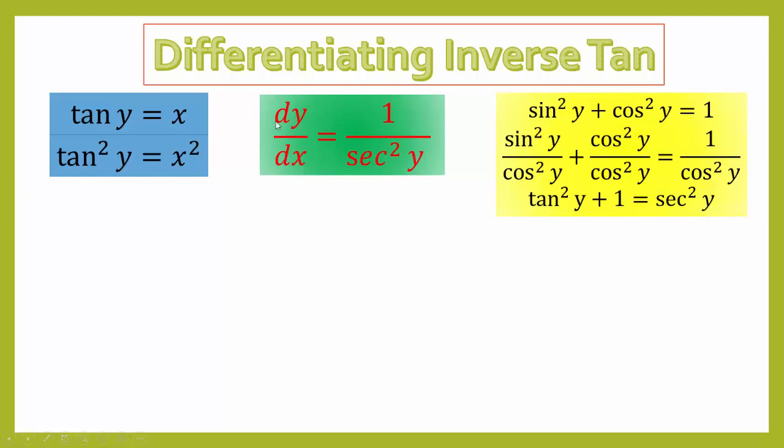Let's start off with the green result: dy/dx = 1/sec²y. Well what do we know about sec²y? Over here in the yellow box, sec²y = tan²y + 1, which is the same as 1 + tan²y. So we have 1/(1 + tan²y).